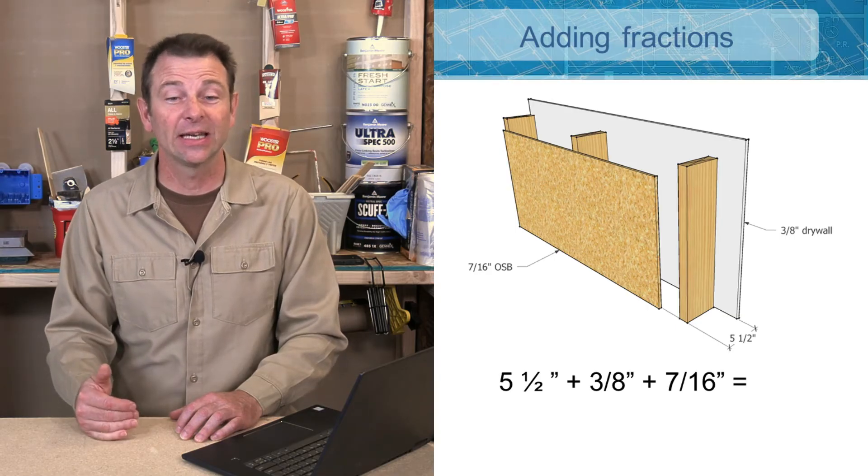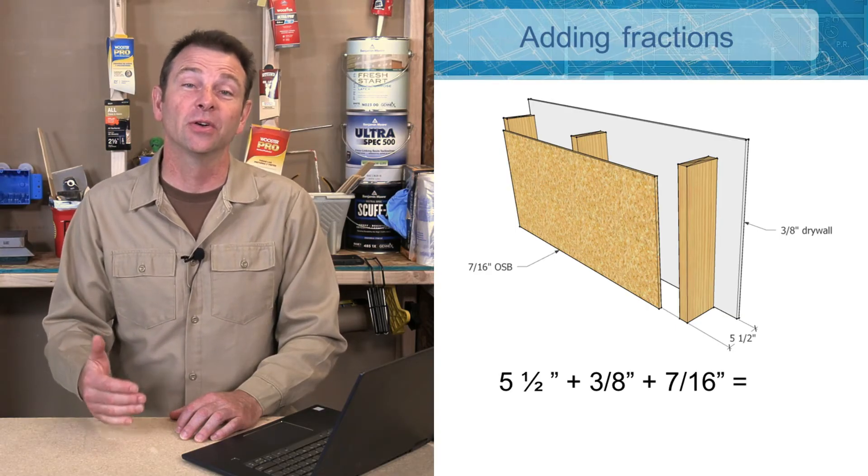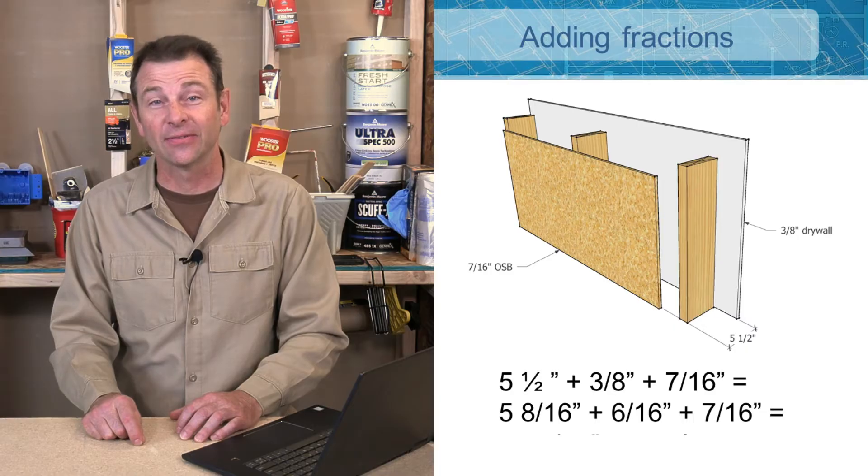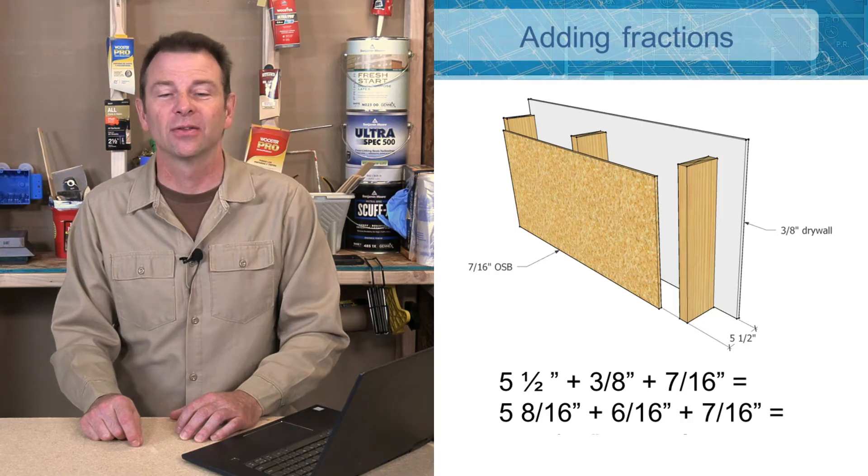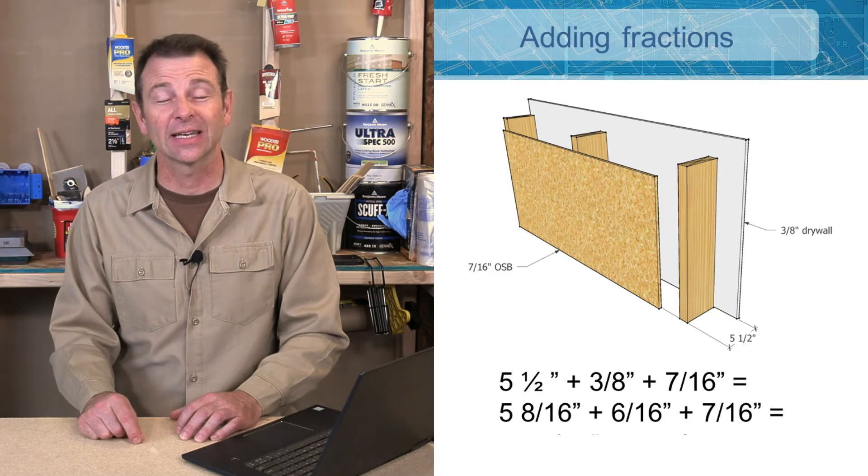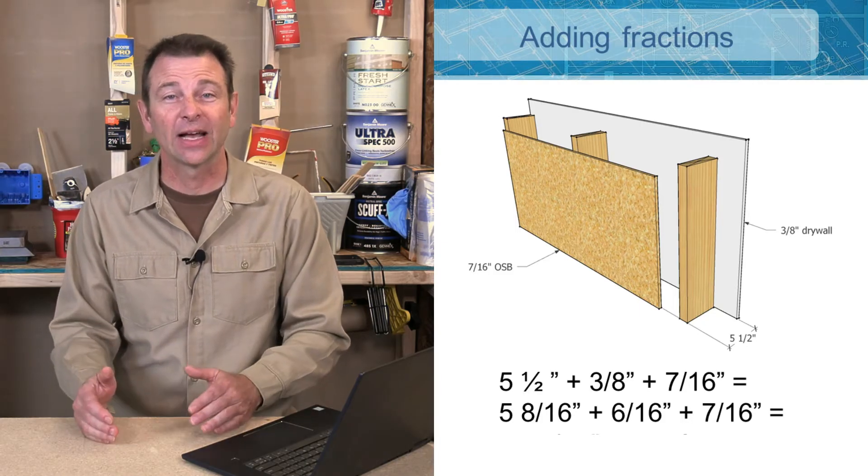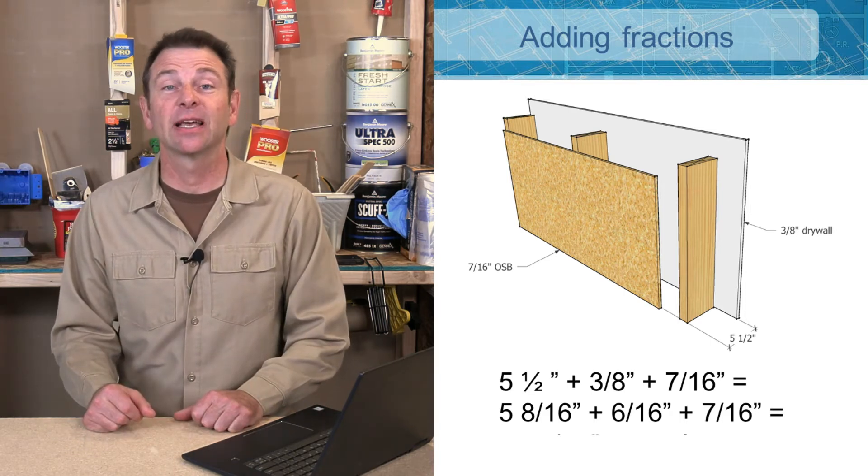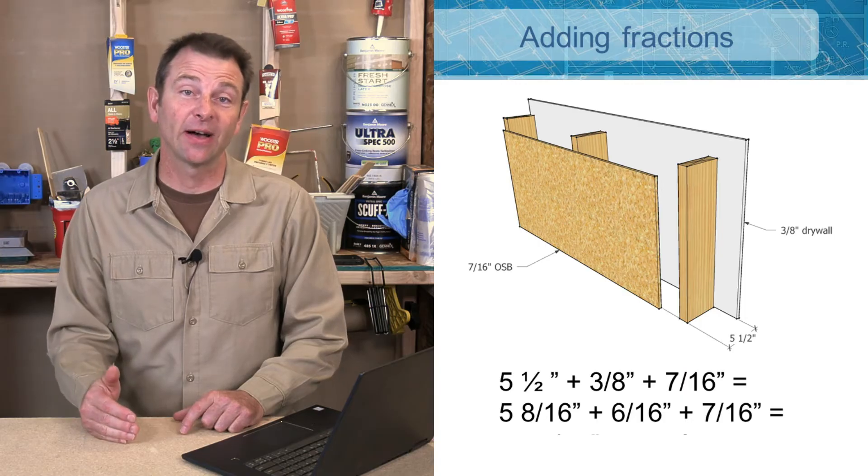We're going to choose 16, which will convert all of our numerators to different numbers. So 5½ turns into 5 and 8/16. Our 3/8 we can convert to 6/16, same value, different numbers. Now that we have all our denominators the same, we can add these numbers together.